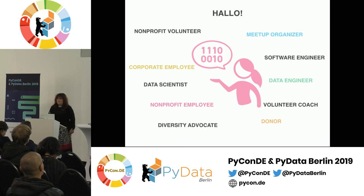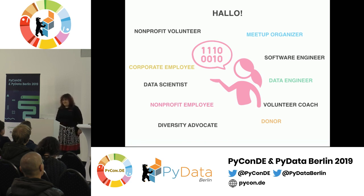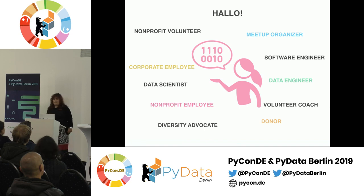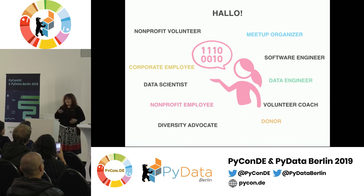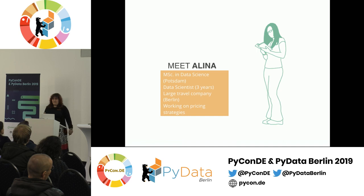I've been very passionate about having a positive social impact for probably the last 15 to 20 years, since I graduated high school. I've worn a lot of different hats: I've volunteered in nonprofits, been a corporate employee, a data scientist, a data engineer, and a software engineer. I've organized meetups, been a diversity advocate, coached voluntarily, and also donated to organizations. In all these contexts, I've always faced issues like: how can I make my investments of time, money, and skills most effective? That's what I want to focus on in this talk.